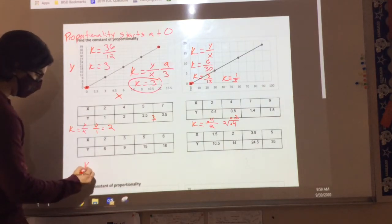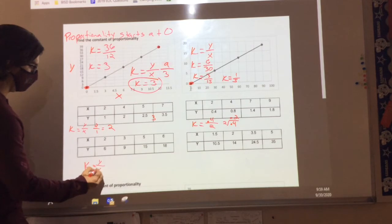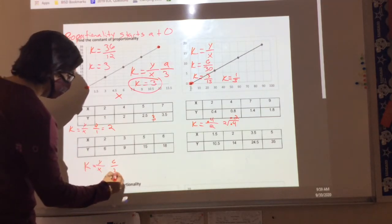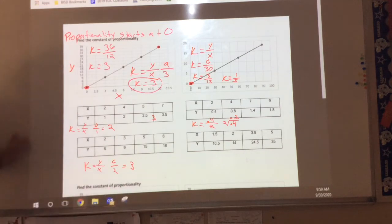The formula is K equals Y divided by X. Not 2 divided by 6. Look, it literally has Y right here. 6 divided by 2. So K is going to equal 3.